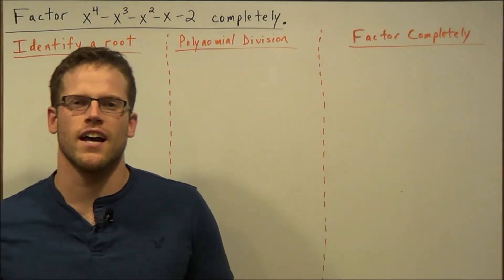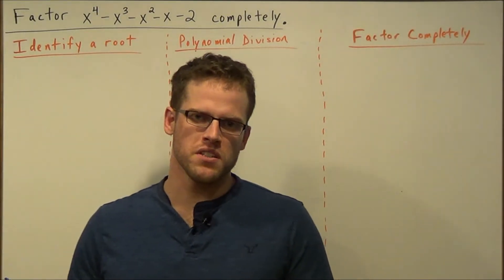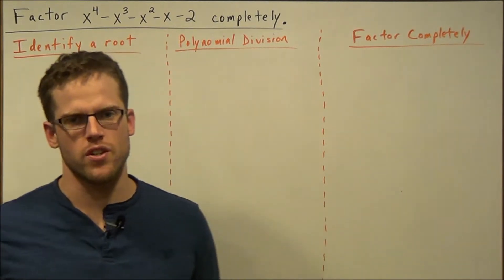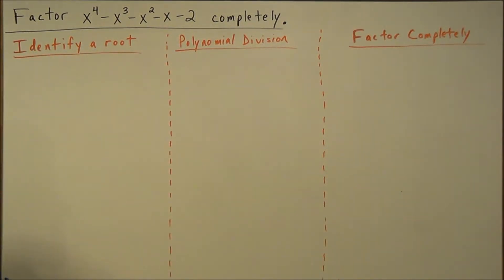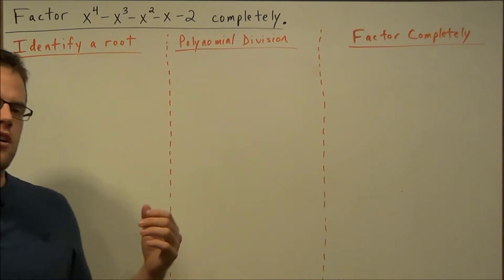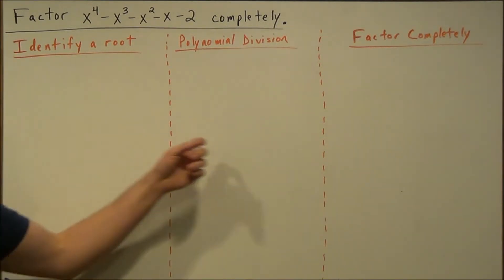Hi, my name is Vincent and today I want to take a look at how to factor completely using polynomial division and grouping. We have a request from the user Aiden Bolts and it's the problem: factor x to the fourth minus x to the third minus x squared minus x minus 2 completely, and here are the steps.